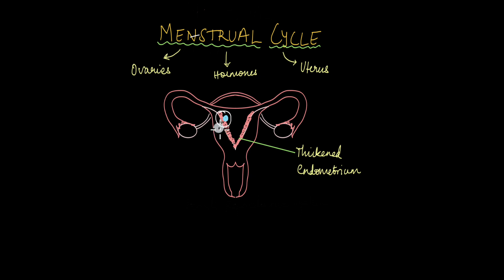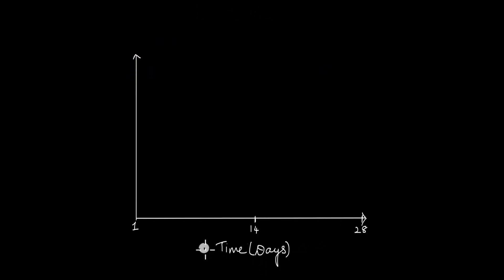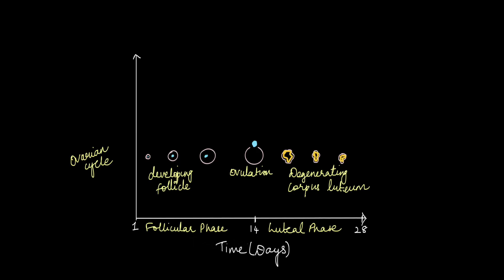If pregnancy does not occur and implantation does not occur, the endometrium is shed and released by the process of menstruation — this is what happens when women get their periods. This menstrual cycle is not just about the uterus; it involves the ovaries as well. We'll look at the ovarian and hormone cycle that happens every 28 days in women in the form of a graph, plotting time in days on the x-axis and changes in the ovary, hormone levels, and the endometrial layer on the y-axis.